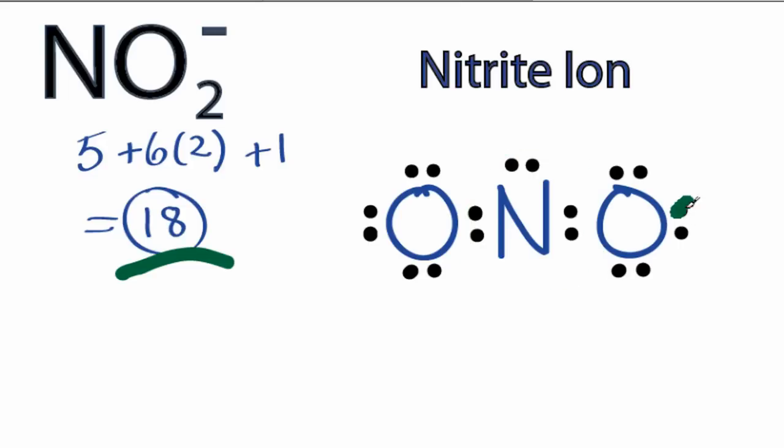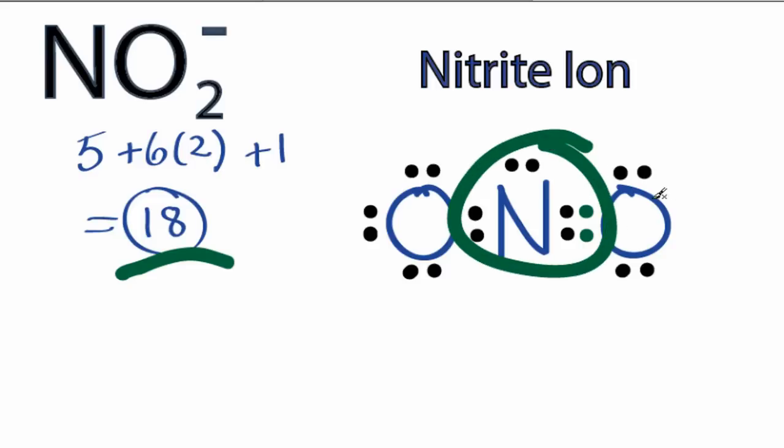Let's take 2 valence electrons here from the oxygen and share them to form a double bond. Now the nitrogen has an octet, 8 valence electrons, and the oxygen still has 8 as well.